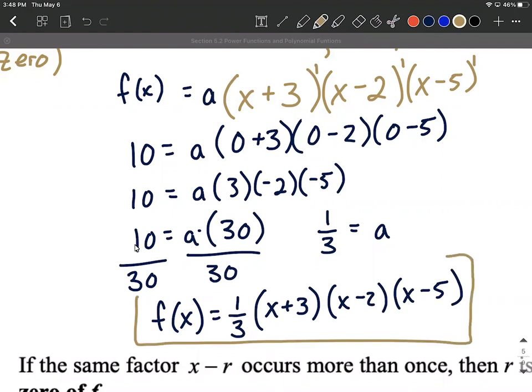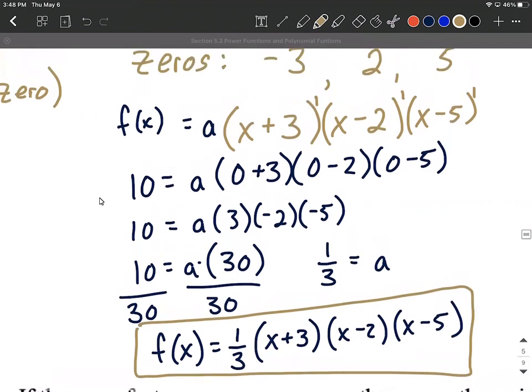The polynomial that has the given zeros and the y-intercept that we were looking for. All right I hope this helps out as you're trying to build up polynomials based on zeros and a y-intercept. Good luck.